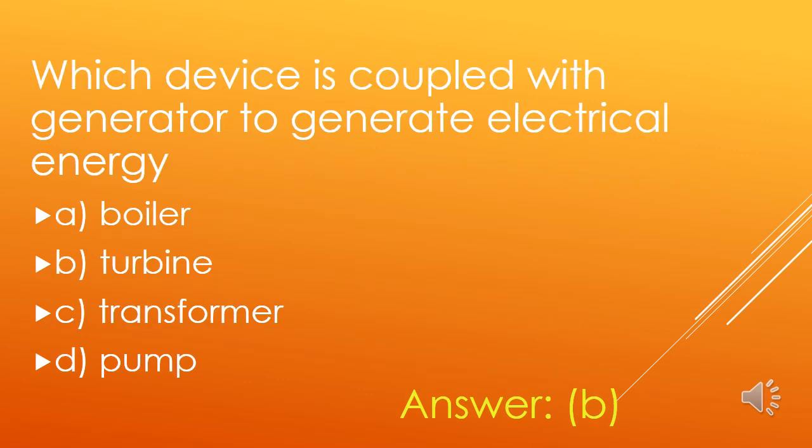Which device is coupled with a generator to generate energy? A. Boiler, B. Turbine, C. Transformer, D. Pump. Turbine is coupled with a generator in electric power generating stations. Steam turbine is coupled with a generator in thermal power plants. Water turbine is coupled with a generator in hydroelectric power plants. So, option B is the right answer.